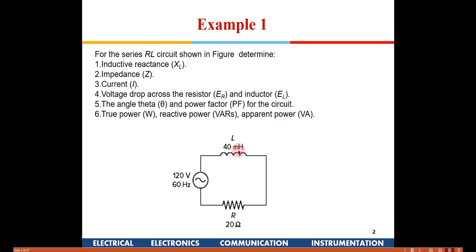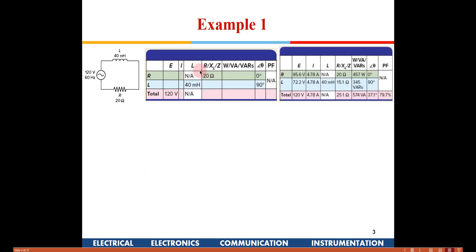The first problem is for a series LR circuit. We need to find the inductive reactance XL, the total impedance Z, total current I, voltage drop across the resistance and inductor, power factor, the phase angle theta between current and applied voltage, and the true power, reactive power, and apparent power. In the given circuit, L is 40 millihenry, resistance is 20 ohms, and voltage is 120 volts at 60 hertz.